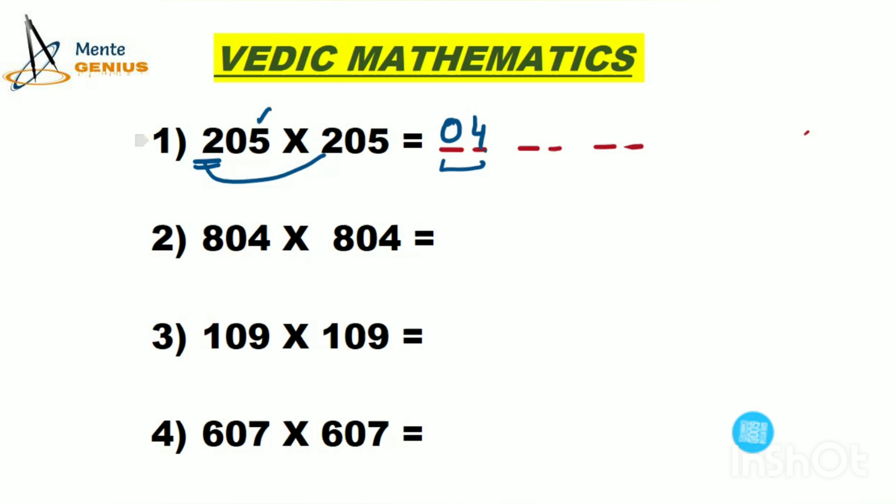For the middle two places, we multiply the two digits: 2 times 5 equals 10. Then we double it: 10 doubled equals 20. So the middle two places are 20. This is for 205 times 205, giving us 042025.